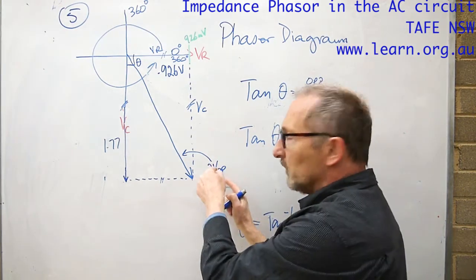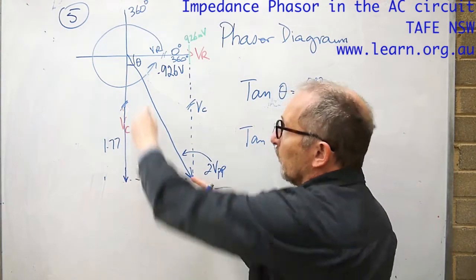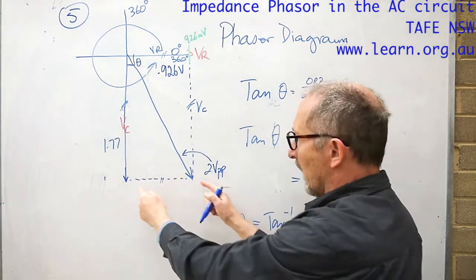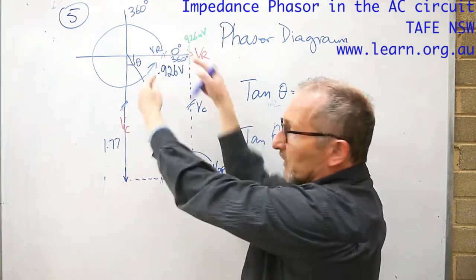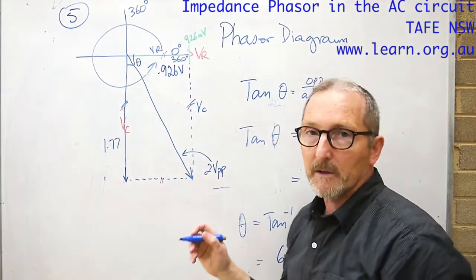If we didn't know what that was we'd be able to, well we could work it out with trigonometry or we could even use a ruler and we could measure it if we did everything to scale on a diagram like the one that I've drawn.